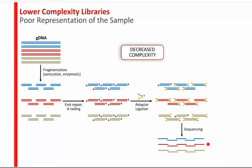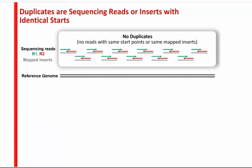Now let's talk about duplicates. When we push the limits of NGS using smaller and smaller amounts of input DNA, duplicates become a very important factor. Here's a reference genome with paired-end sequencing clusters — the gray lines are mapped inserts. In a non-duplicate scenario, all reads are unique with different starting points and unique mapped inserts. In a duplicate scenario, highlighted in orange, both the starting points of reads and their mapped inserts are identical — those are considered duplicates.